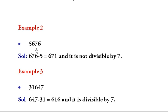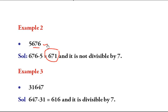Let's take another example: the number 56676. Starting from the unit digit, the first group is 676 and the second group is 056. We calculate 676 - 056 = 620, wait — 676 - 56 gives 671. Checking 671 by 7: seven nines are 63, leaving 41, which is not divisible by 7. Hence 56676 is not divisible by 7.